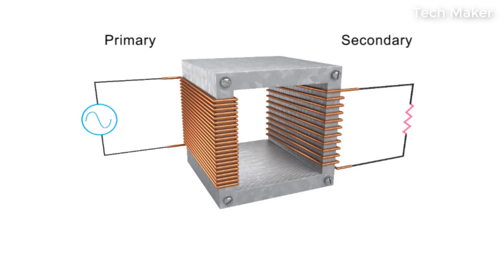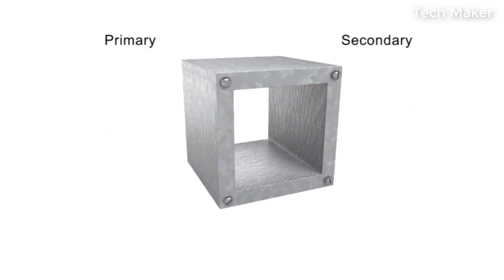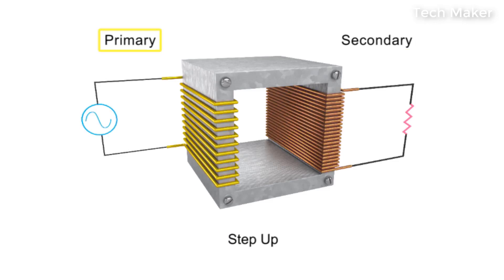Transformers can either step up or step down a voltage. In a step down transformer, the number of turns in the primary coil is greater than the number of turns in the secondary coil. In a step up transformer, the number of turns in the secondary coil is greater than the number of turns in the primary coil.